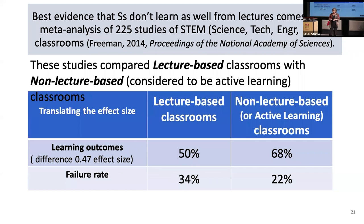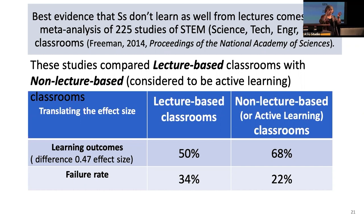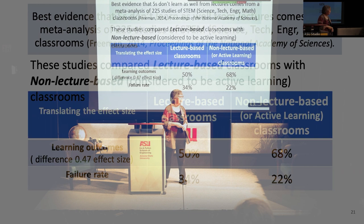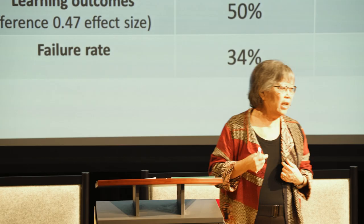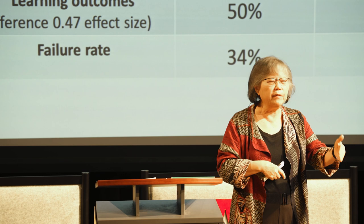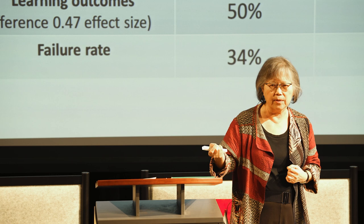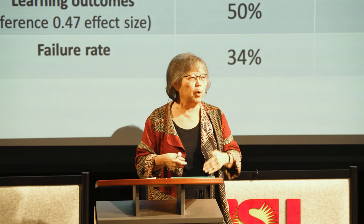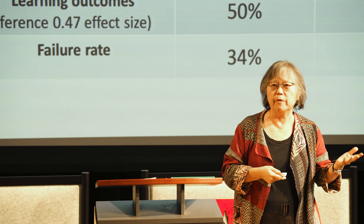The best evidence that students don't learn as well in a lecture context comes from a meta-analysis by Freeman — 225 studies comparing lecture-based with non-lecture-based classrooms. Translating the effect size, the learning outcome difference was 0.47: if you got 50% correct in a lecture-based classroom, you'd get 68% correct in a non-lecture-based classroom. The failure rate also changes — from 34% to 22%.